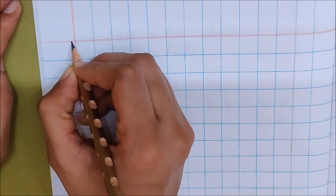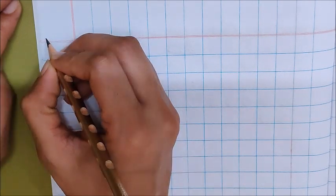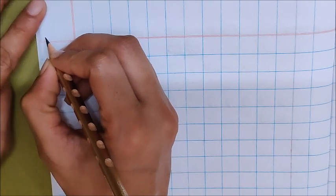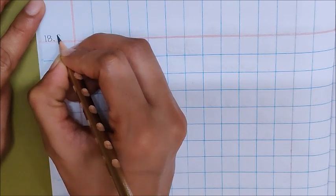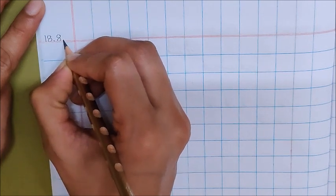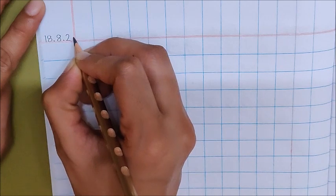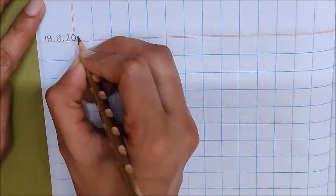Now children, in this box write down tomorrow's date. Tomorrow is August 18. 18 dot, 8 dot, 20, 20.